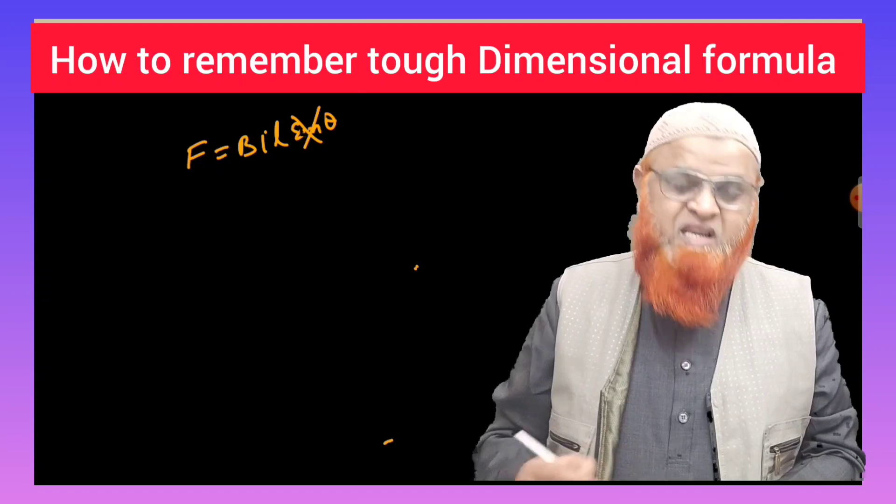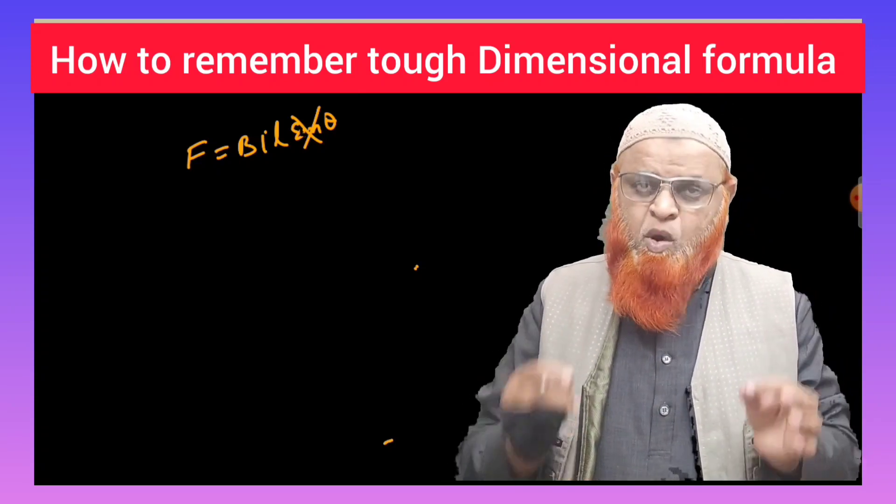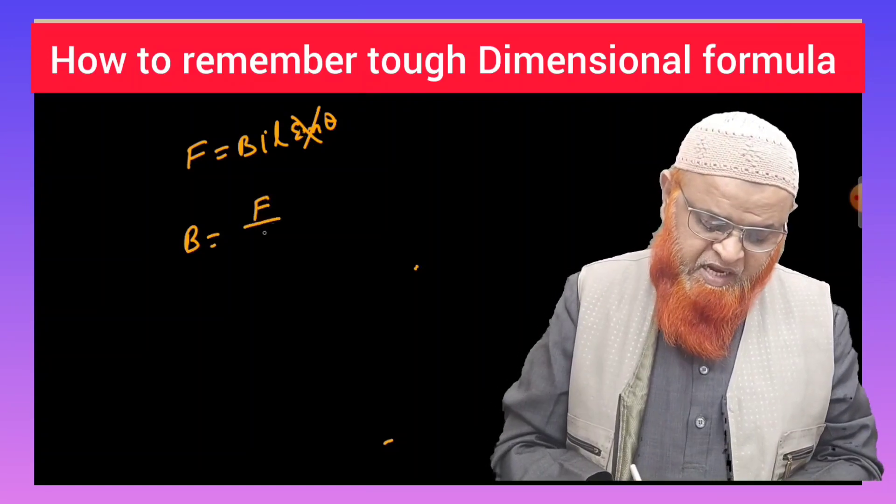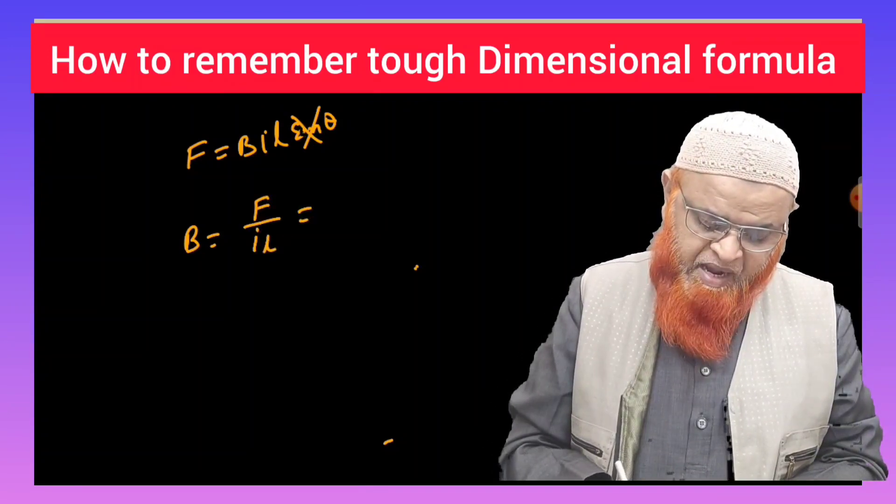So we can cancel sine theta, and you have to find out what is the dimensional formula for B. It's very simple. If you write B, you will write F by IL.